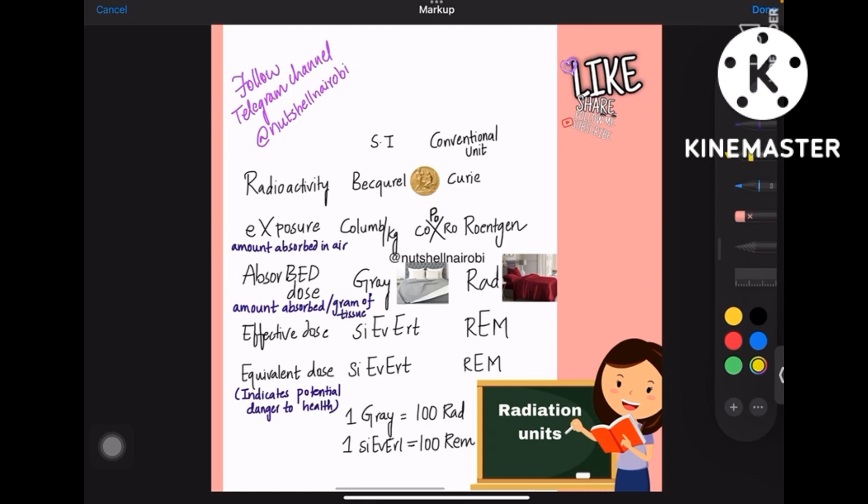Coming to the SI and conventional units of each term. Radioactivity: remember it like Becquerel and Curie actively worked for the Nobel Prize. So Becquerel and Curie actively worked for the Nobel Prize. First is radioactivity.